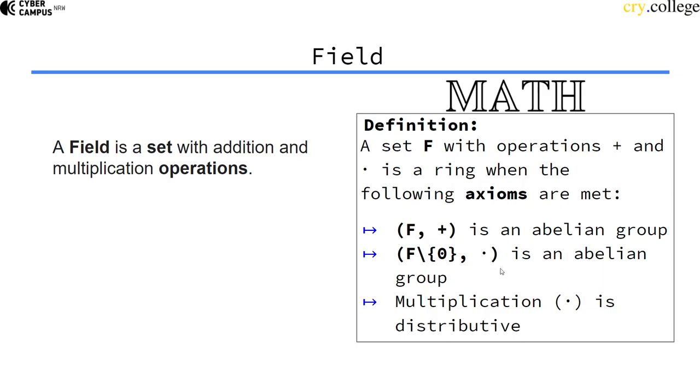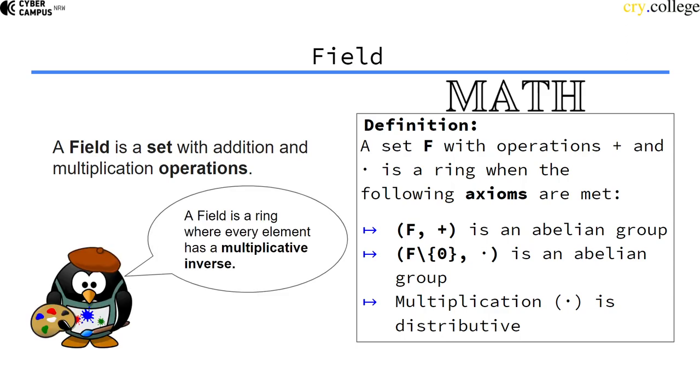The difference between a ring and a field is that in a field, the multiplication is also an abelian group, except for the identity element under addition. Every element has a multiplicative inverse. That's the difference.